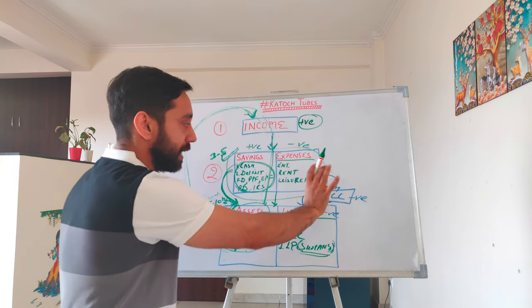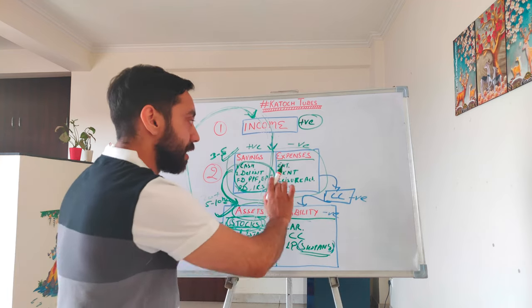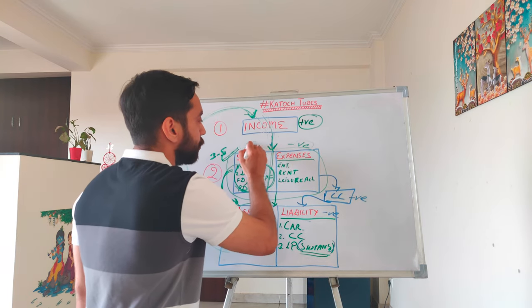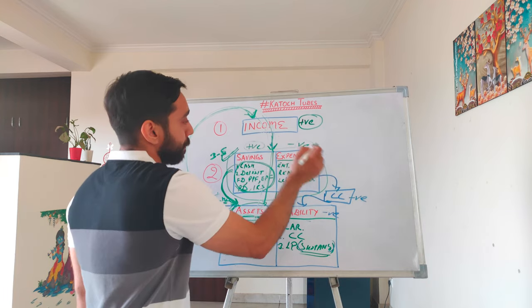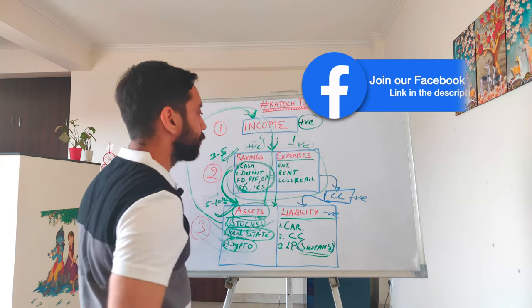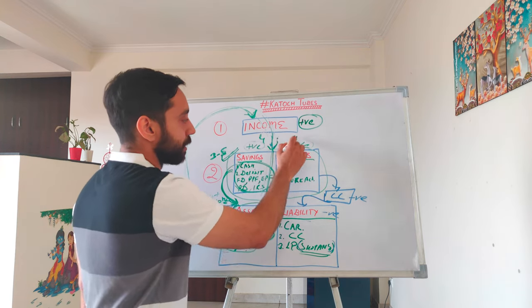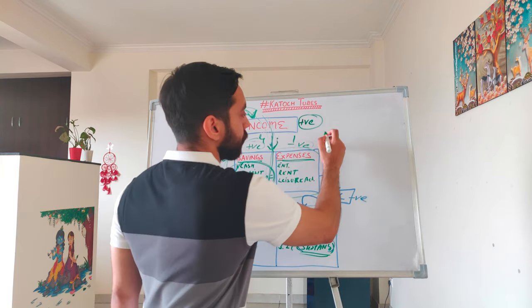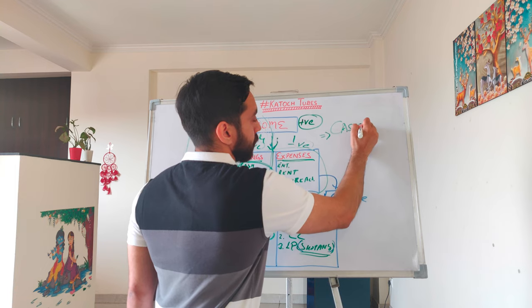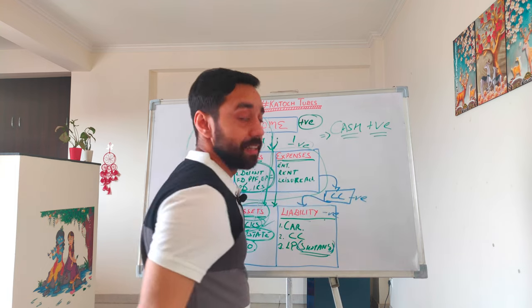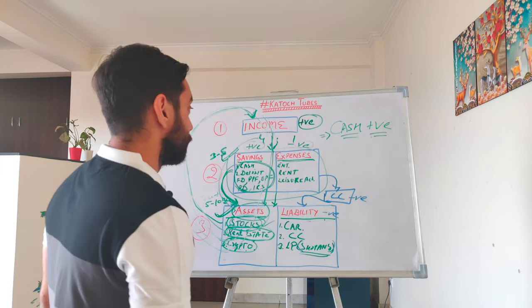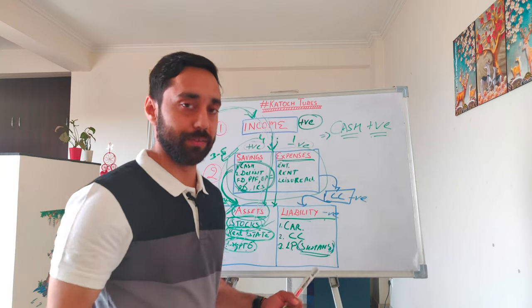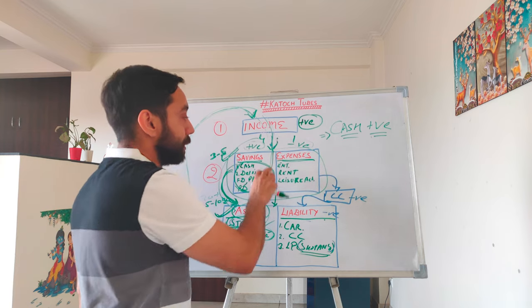You can always put some part towards leisure activities — I'm not telling you not to spend anything. You can watch movies, live in good houses, and have luxury activities, but make sure the ratio is controlled. Make a ratio of four to one: whatever income you have, put the fourth part into savings and one part into expenses. Plan that fourth part into assets, decrease your liability, and increase your overall cash. At the end of the day, you should be cash positive, with assets strong enough to generate an income so you don't need to depend on any other work.